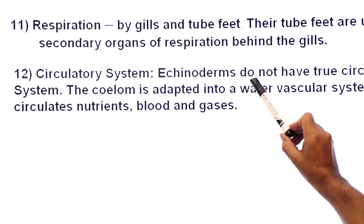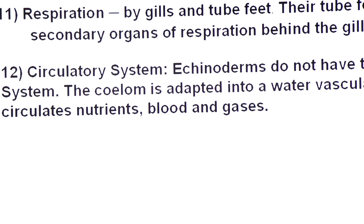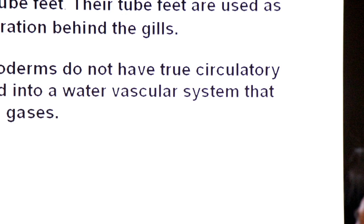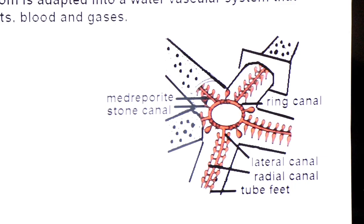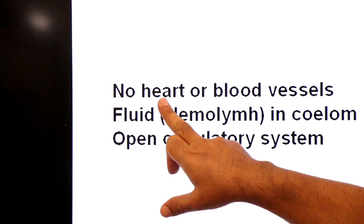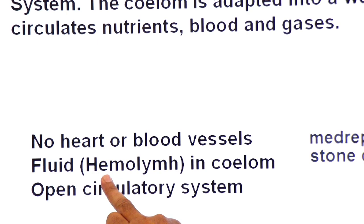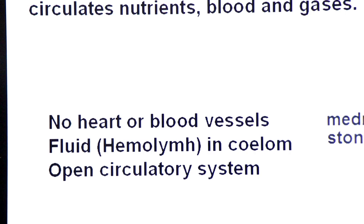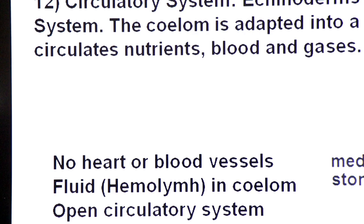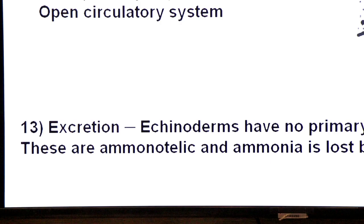Circulatory system. Echinoderms do not have true circulatory system. True circulatory system absent. No heart, no blood vessels. The coelom is adapted into water vascular system that circulates nutrients, blood, and gases. This is the diagram showing water vascular system. And you see here, they have no heart, no blood vessels. Their blood is colorless due to the absence of hemoglobin. This colorless blood is called hemolymph, present in coelom. And they have open circulatory system because hemolymph does not flow through closed blood vessels.